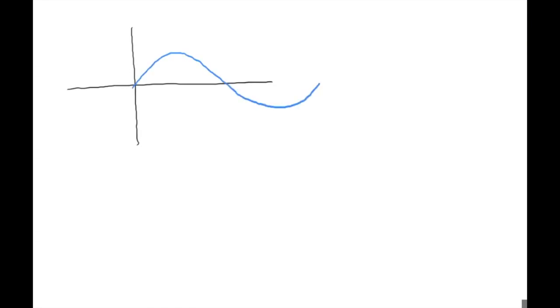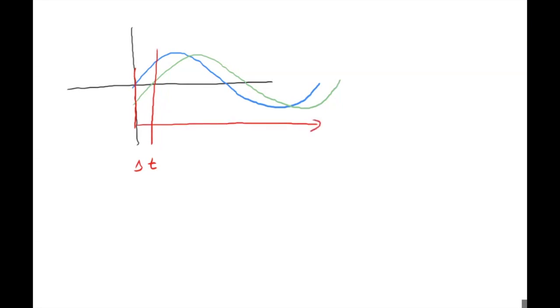To measure the phase shift, you measure the delay between when one signal starts and when the next signal starts. Consider a sine wave that crosses zero at time equals zero, and another voltage at the same frequency but shifted in time by delta-t. We measure the time difference delta-t at the zero crossing. What we're interested in is the angular difference — what fraction of 360 degrees is the phase shift. If we know the full period T, then delta-t over T equals the angular phase shift divided by 360 degrees.